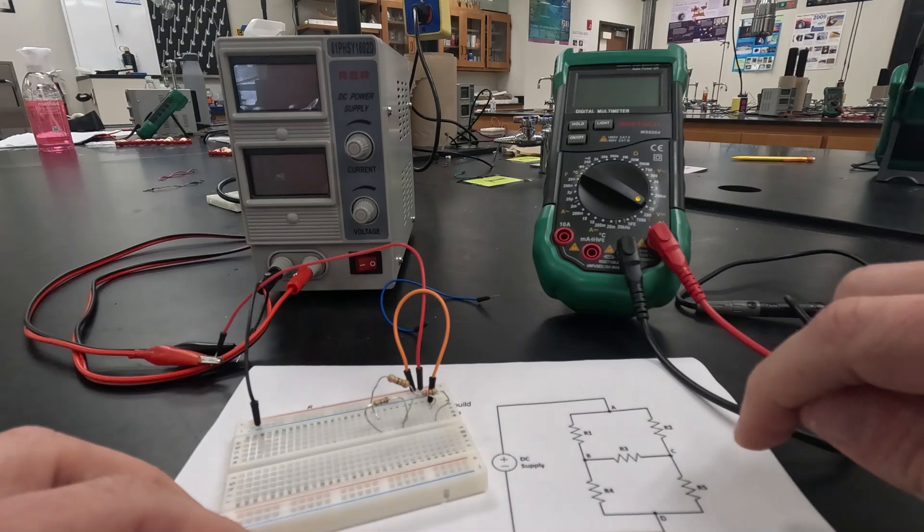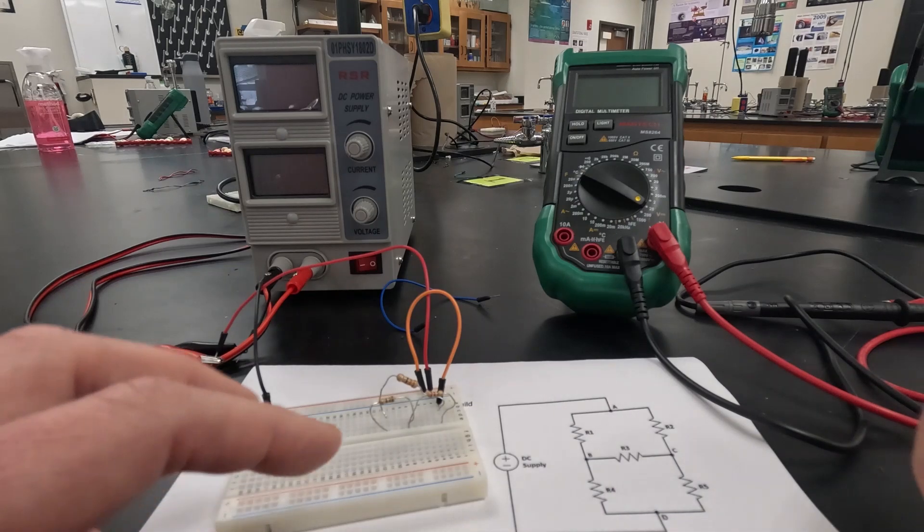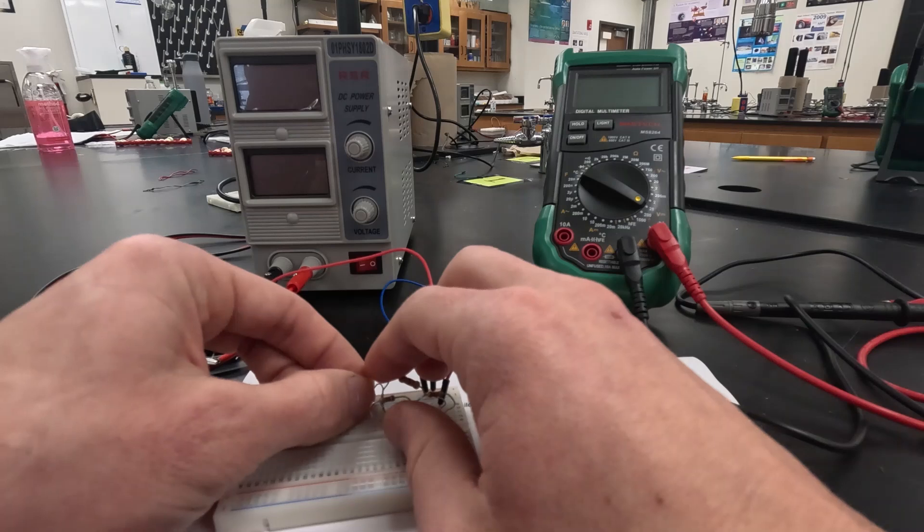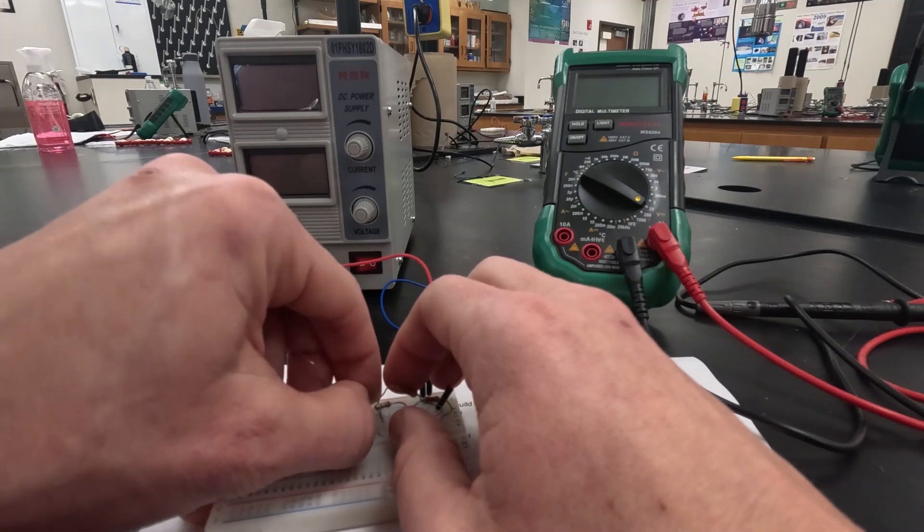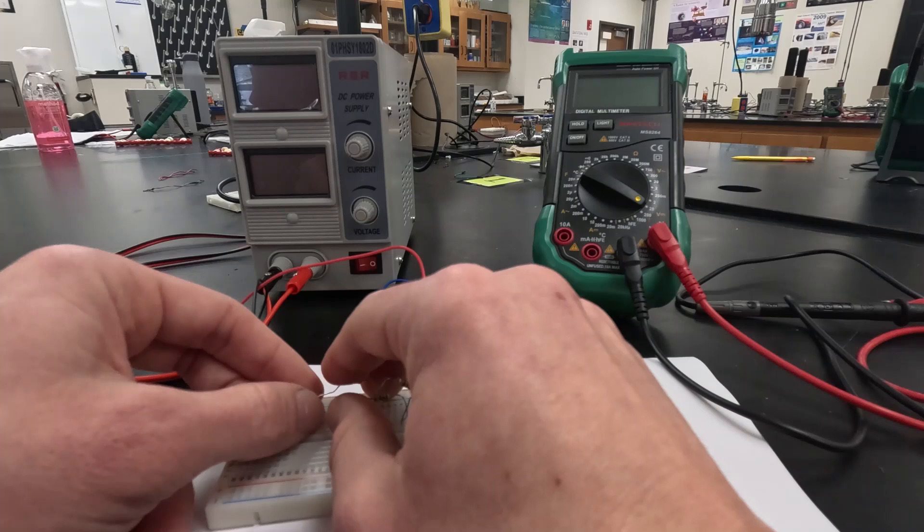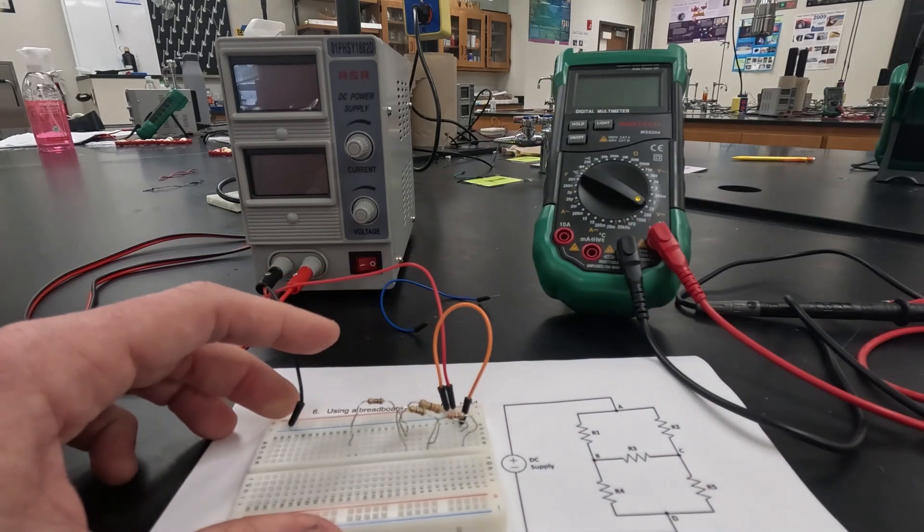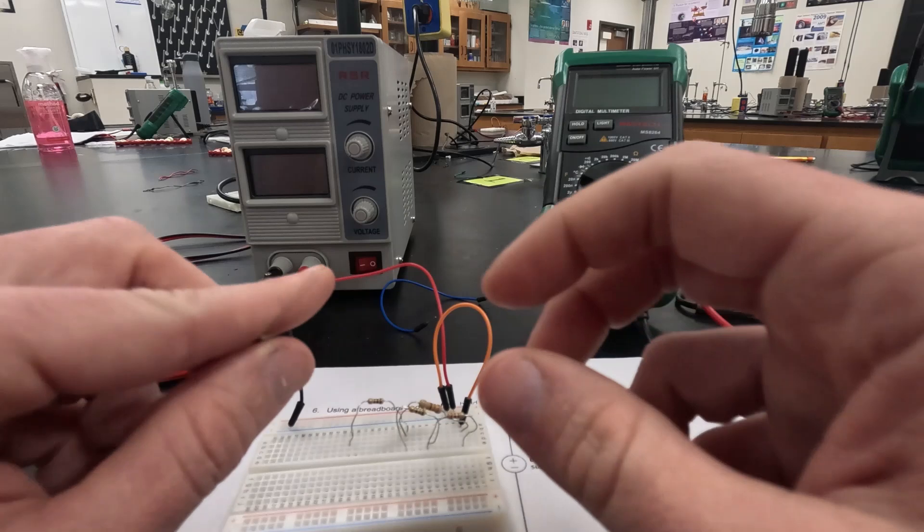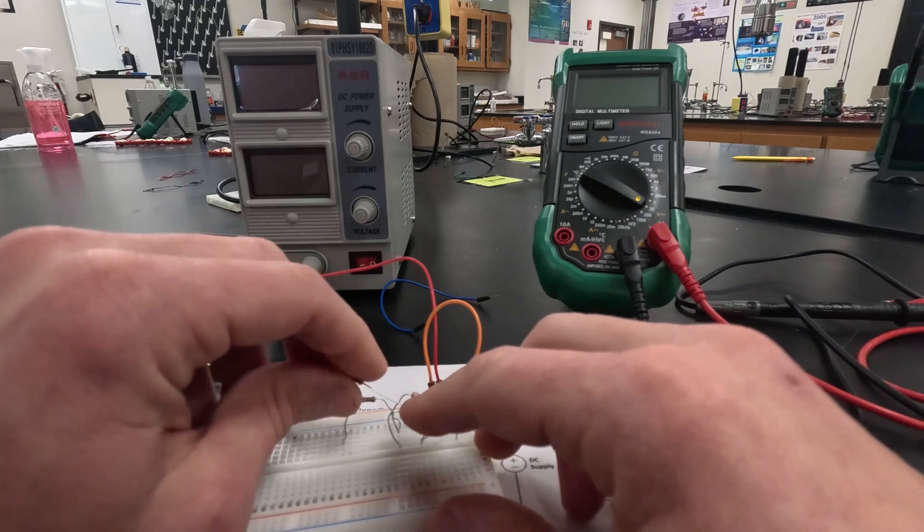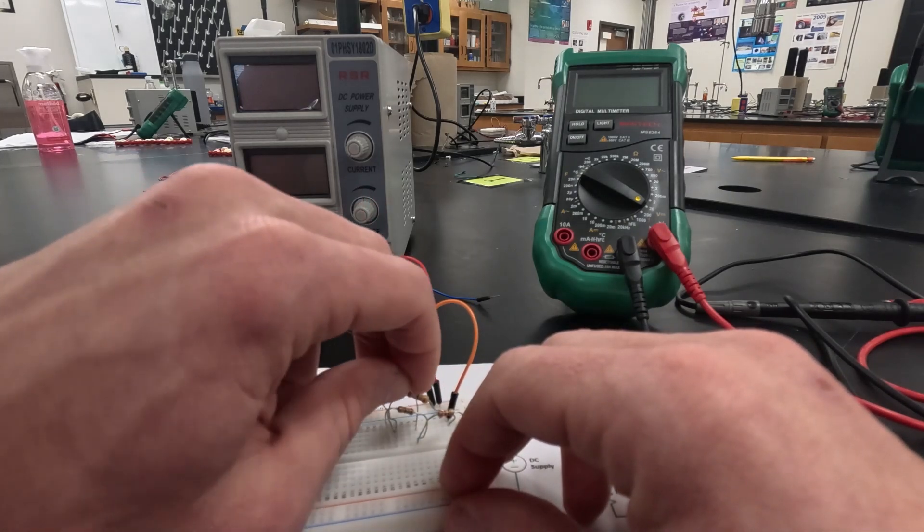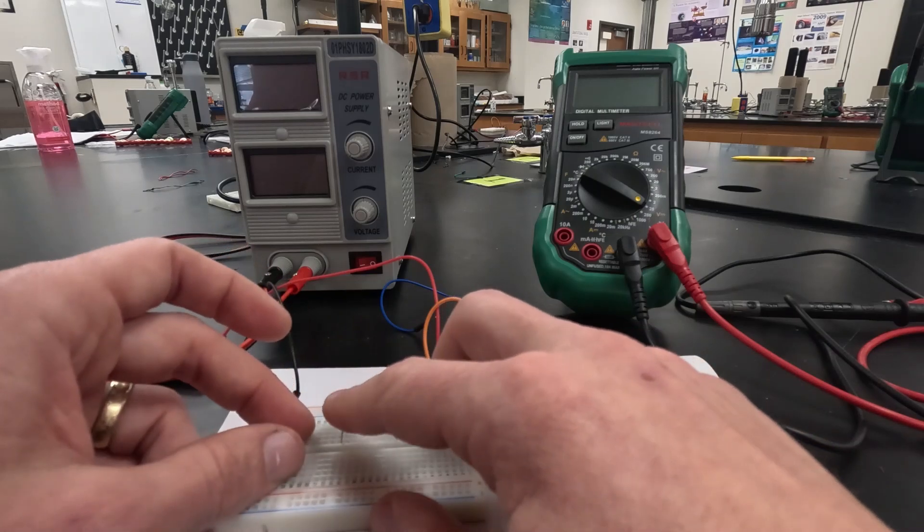Then next I need R4 and R5. I'll start with my R4, my 100 ohm resistor. That's going to go from that row 11 where my first resistor ended, and then it's going to go down to row 19. Then my last one, this is my 470. That 470 I'm going to take from row 8 all the way down to row 19. I'll get into row 8 here on this end and take that all the way down to row 19, same row as my last resistor.